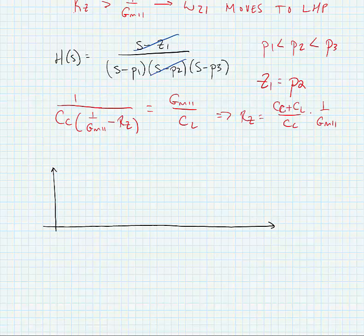After we do this, we know what the third pole frequency is because we know the size of Rz. Remember, omega p3 is equal to one over Rz times c1, and so omega p3 would be equal to one over c1 times one plus cl over cc times one over gm2.